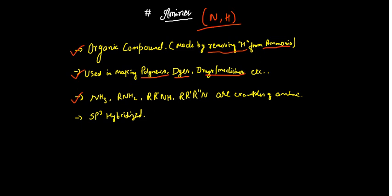Let's see some examples. NH3 is ammonia itself. When you remove one hydrogen, two hydrogens, or three hydrogens, we call them amines. These are the degrees we're going to talk about.